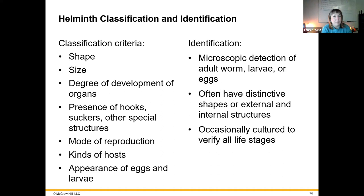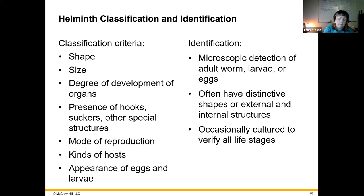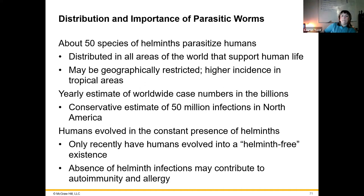How do we classify helminths? They have pretty obvious structural traits. We can classify them based on the shape of the adult worms, the size, the degree of development of organs, reproduction, their hosts, and whether they have hooks or mouth parts. Microscopic detection of eggs or larvae can also be involved. Some don't need a microscope at all. That's typically how we would diagnose these based on those traits.